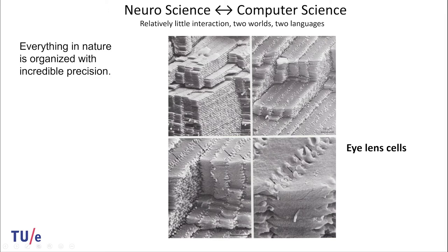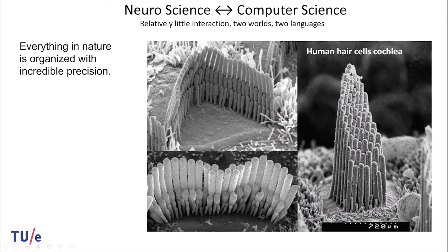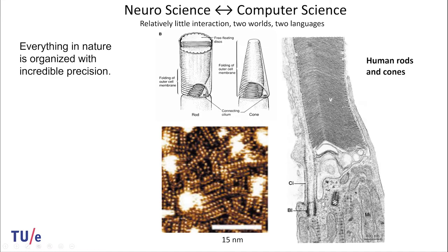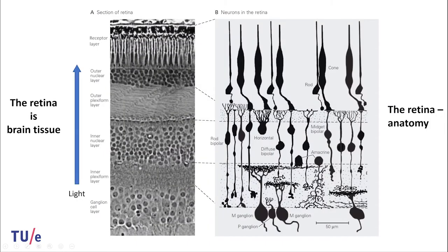So before we look into the biological networks, let's study a little bit more about the brain, the visual system. And if you compare neuroscience and computer science, both are incredibly advanced. In computer science, we have, of course, fantastic advancement of mathematical tools. We have chips that are incredibly powerful. But if you look in neuroscience, they have exactly the same progress. It's incredibly sophisticated. If you look at the visual system, and actually everything in nature is organized with incredible precision. An example here, this is a neutron microscope image from the cells in your lens.